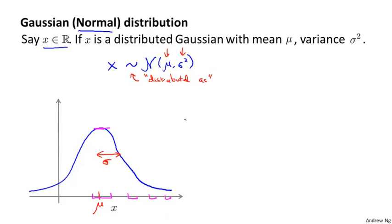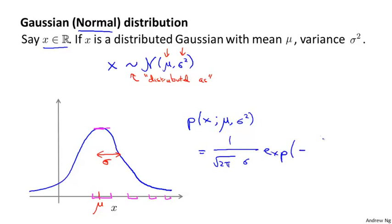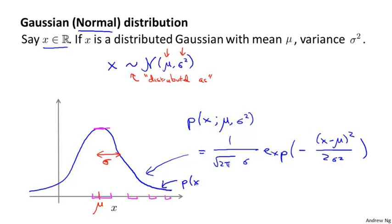For completeness, the formula for the Gaussian distribution is: p(x; mu, sigma squared) = 1 over root(2*pi) * sigma * e to the negative (x minus mu) squared over 2 sigma squared. There's no need to memorize this formula — it's just the formula for the bell-shaped curve, and you can always look it up. This curve is p(x) plotted as a function of x for a fixed value of mu and sigma squared.